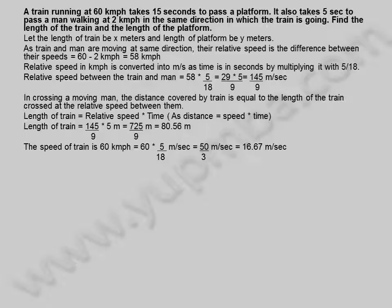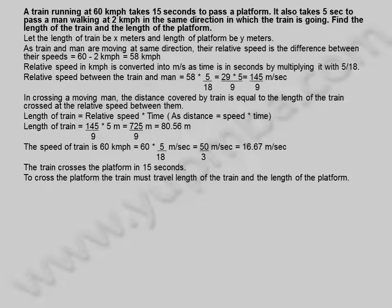The speed of train is 60 kilometers per hour, equals 60 into 5 divided by 18 meters per second, equals 50 divided by 3 meters per second, equals 16.67 meters per second. The train crosses the platform in 15 seconds. To cross the platform, the train must travel the length of the train and the length of the platform.